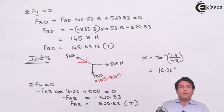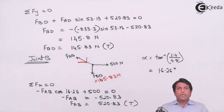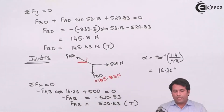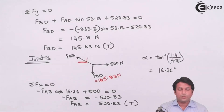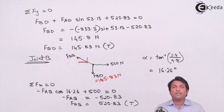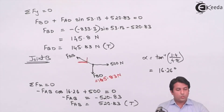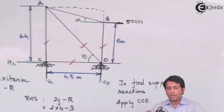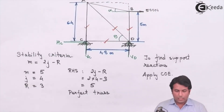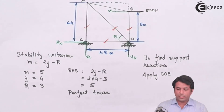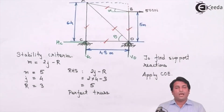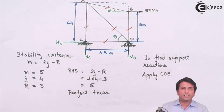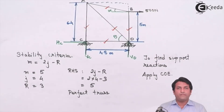I already calculated the force in member BD as 145.83 newtons. Applying the condition of equilibrium at joint B, I found the force in member AB as 520.83 newtons and it is a tensile force. Coming back to the original figure, I have now calculated forces in all five members, and the last step is to prepare the summary table.